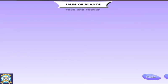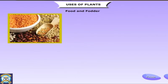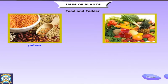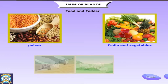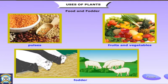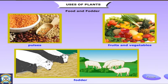Plants provide food for human beings and fodder for animals. Plants give us our staple grains — rice and wheat — and also pulses and oil seeds. Peas and beans are very nutritious and good for health. Some vegetables such as carrot and cucumber are eaten raw. Delicious fruits such as mango or pineapple also come from plants.